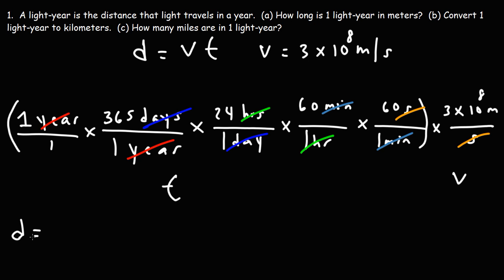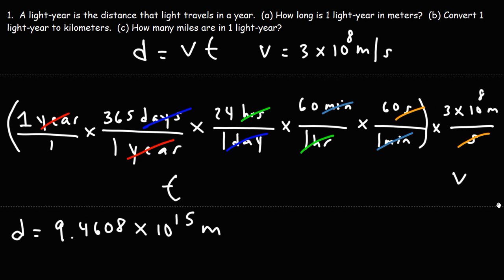So 365 times 24 times 60 times 60 times 3 times 10 to the 8. That's going to give us this answer: 9.4608 times 10 to the 15 meters. So that's the distance of one lightyear. That's how many meters it's equal to.